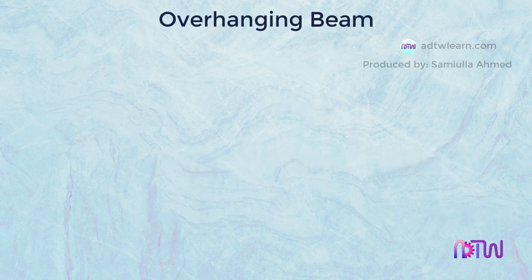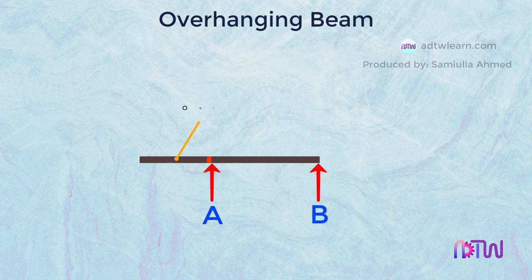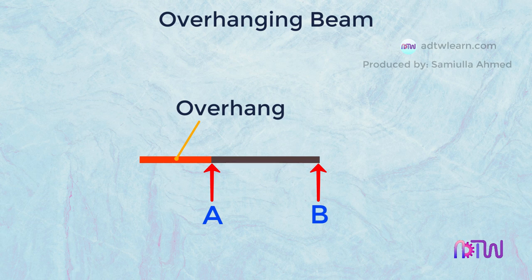Overhanging Beam. This beam is also resting on two supports, A and B. But the portion of this beam is overhanging on one side of the support. This overhang can be on the left or the right side, or the overhang can be on both sides of the beam.